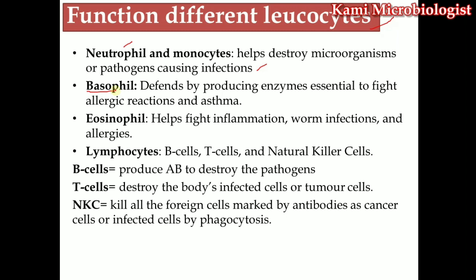Basophils are normally present in very small numbers in white blood cells. Their main function is producing enzymes specially responsible for allergic reactions and asthma-type reactions. Basophil is a granulocyte with granules that actually hide the nucleus. Eosinophils have a spectator-like nucleus and are also granulocytes. Their main function is to be responsible in inflammation reactions, infections, and allergic reactions.